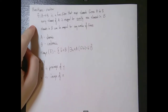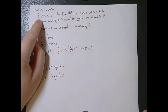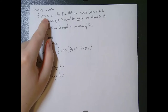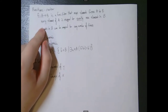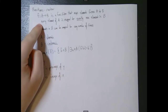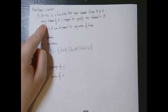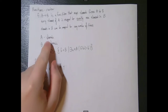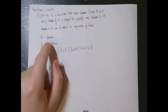What I have right here is some review information about functions. We say that f is a function from A to B — it maps elements from set A to set B, where A and B are non-empty sets. Every element of A is mapped to exactly one element in B.